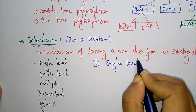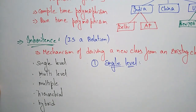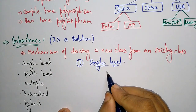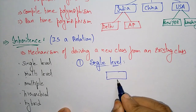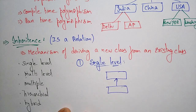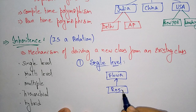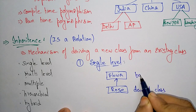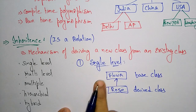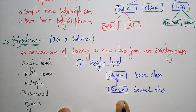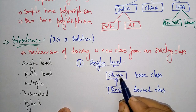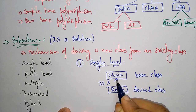The first one is single-level. Inheritance is a mechanism of deriving a new class from an existing class. If one class is already existing, we derive a new class from it. For example, take flower and rose — rose is the derived class and flower is the base class. The derived class acquires the properties of the base class. Rose is a flower.